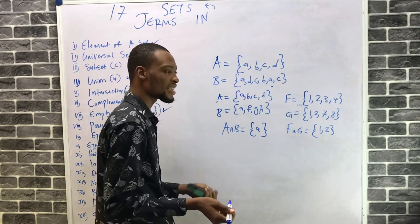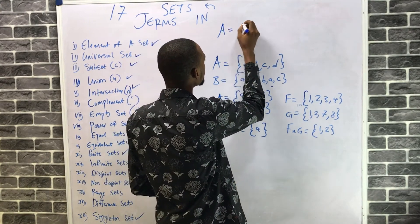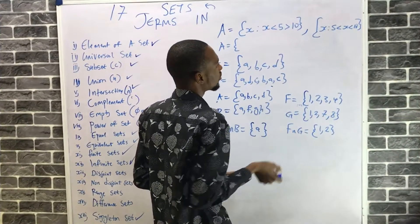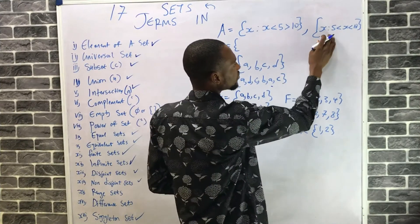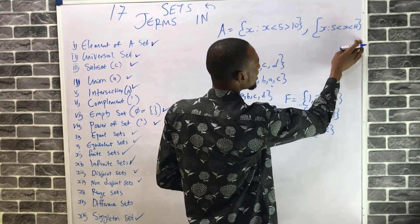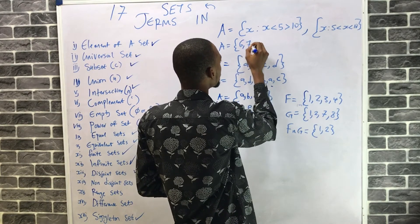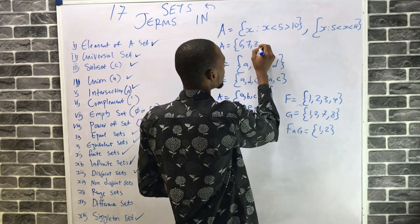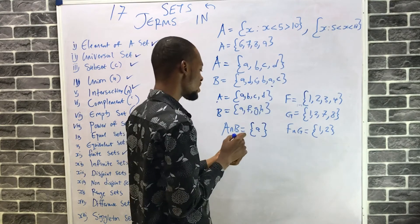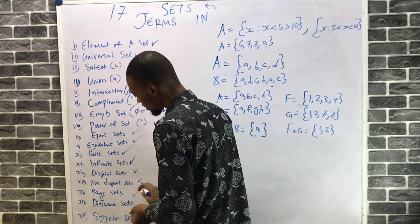The range of sets: if set A = {s : 5 < s < 10}, this means s is greater than 5 and less than 10. In that case the set expands to {6, 7, 8, 9}. That's what we call range of sets.